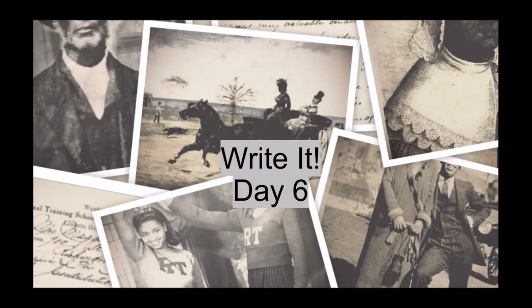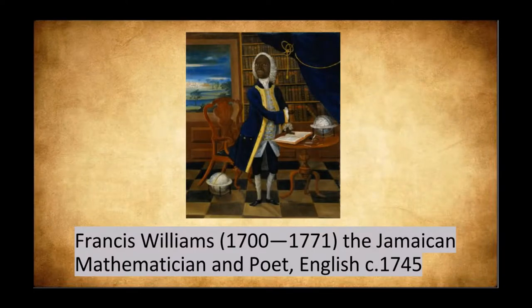Hello, this is Erica from Black Smith Period Films, and I am here for day six of our writing series for Black History Month. The past two days were about unknown people in history, but today we are doing a historical figure, and we know a lot about him. His name is Francis Williams. He's a Jamaican mathematician and poet. He was born in 1700 and died 1771, so he led a pretty long life.